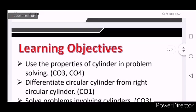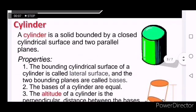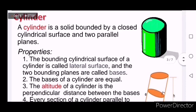Hello guys, in this video we will cover cylinders. A cylinder is a solid bounded by a closed cylindrical surface and two parallel planes. As you can see it's like a can. The bounding cylindrical surface of a cylinder is called lateral surface.